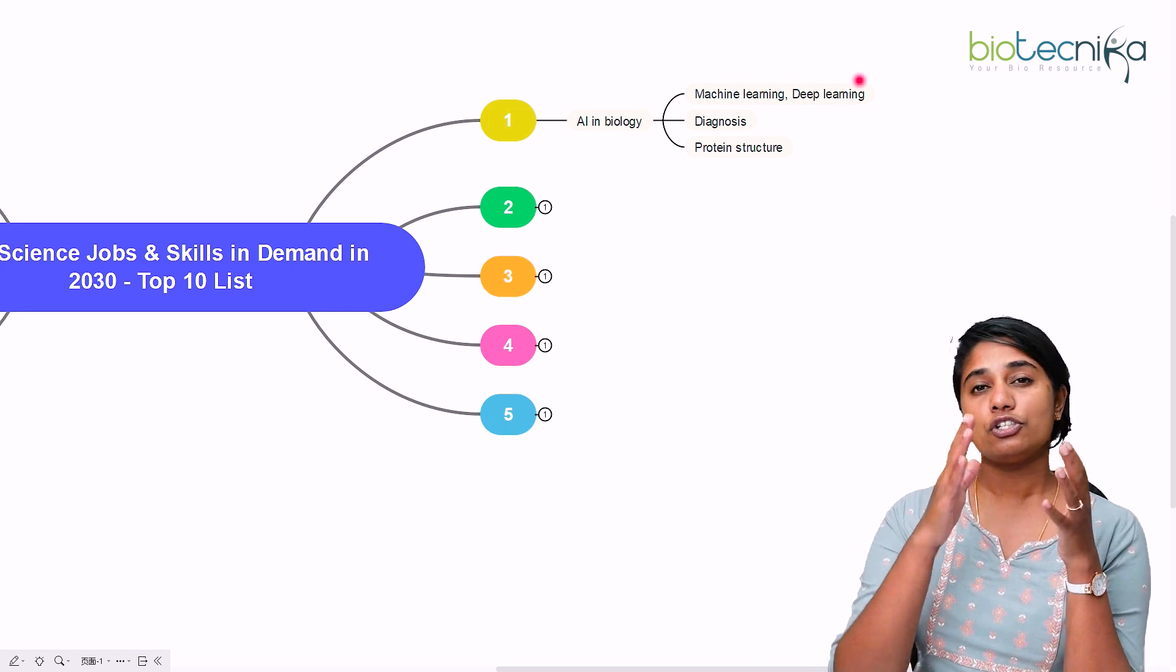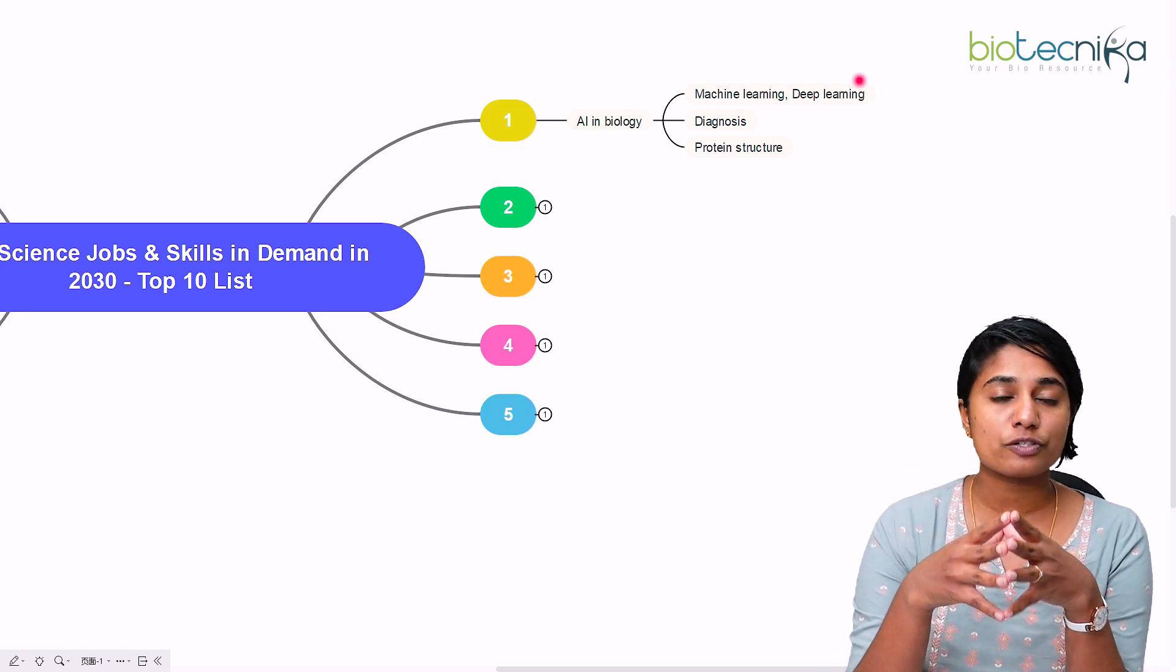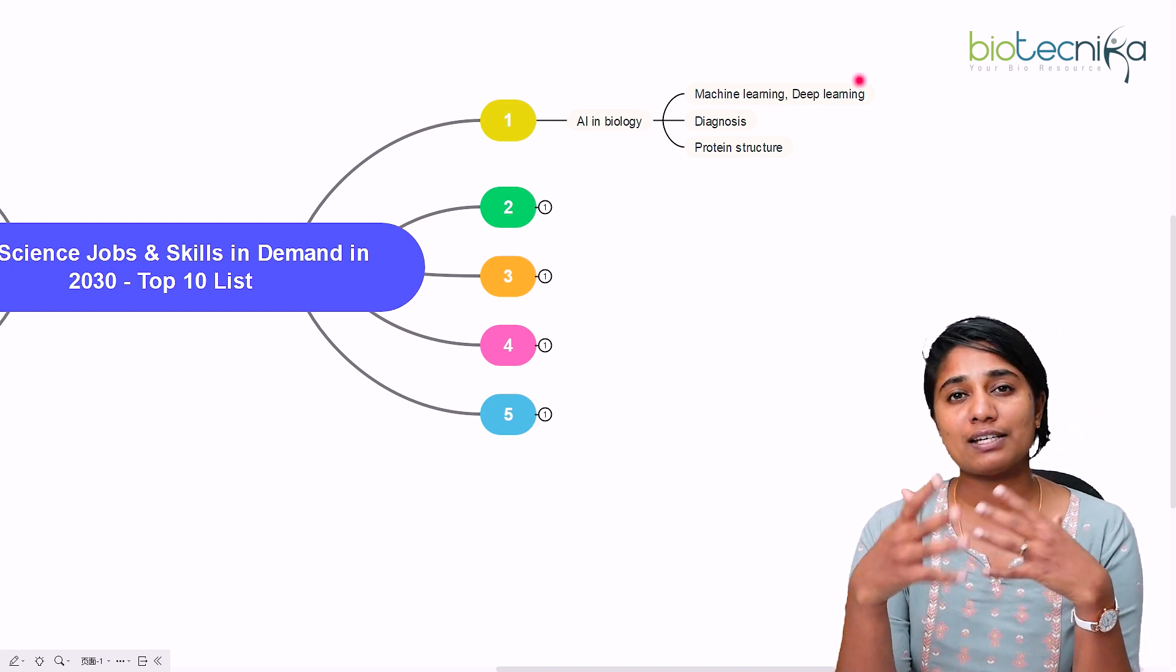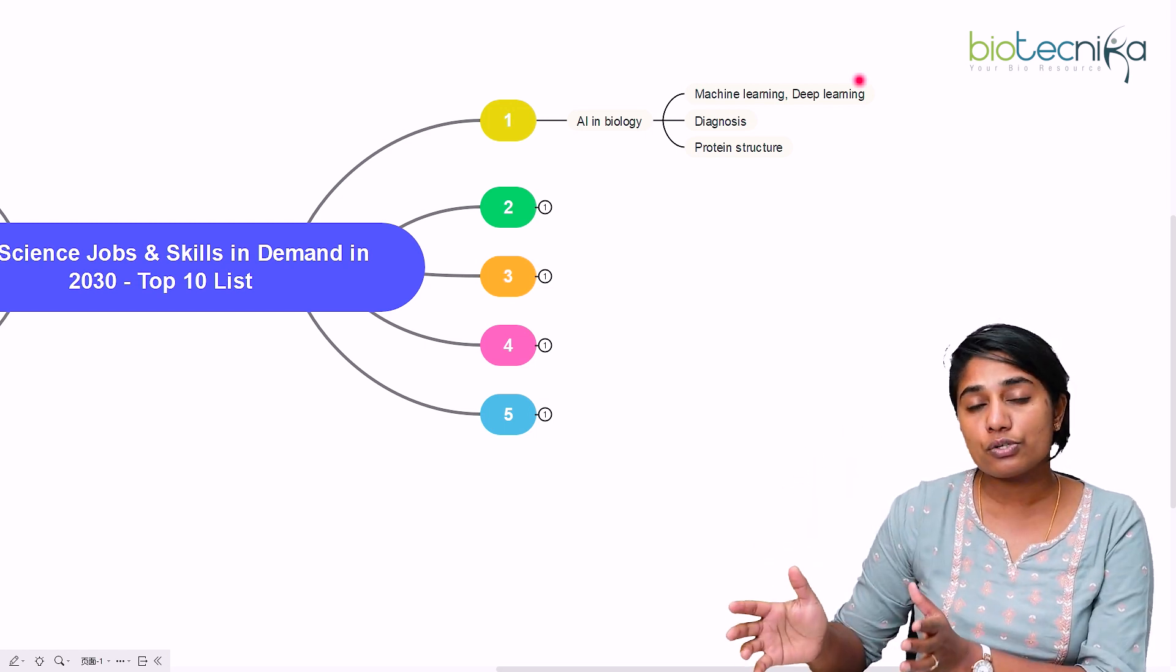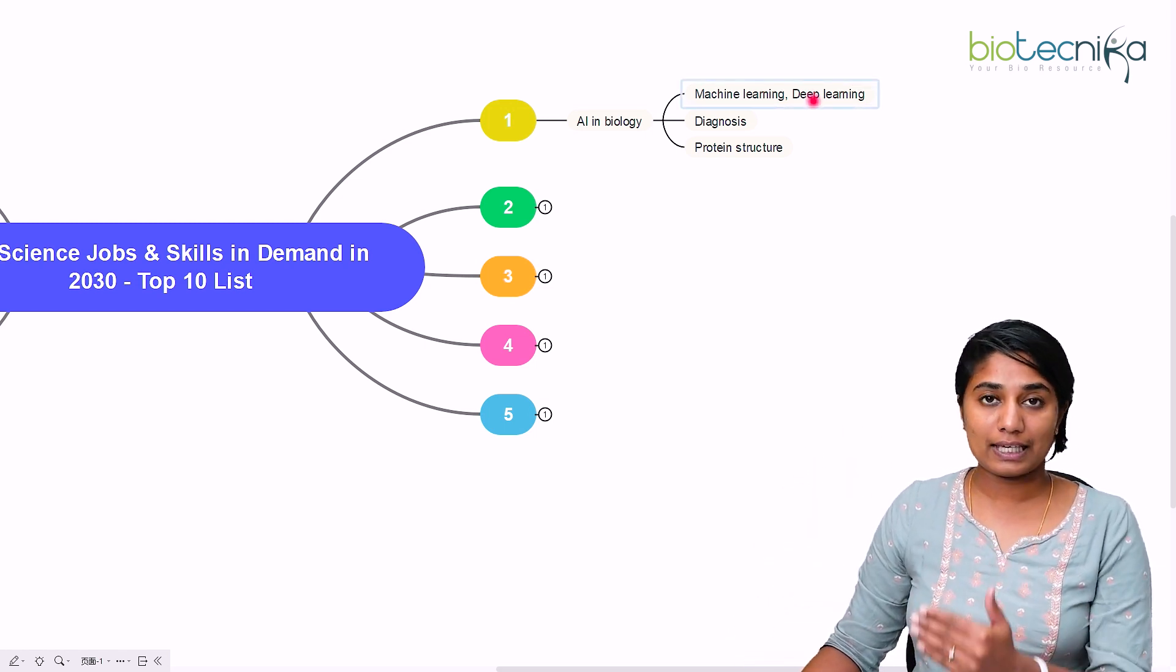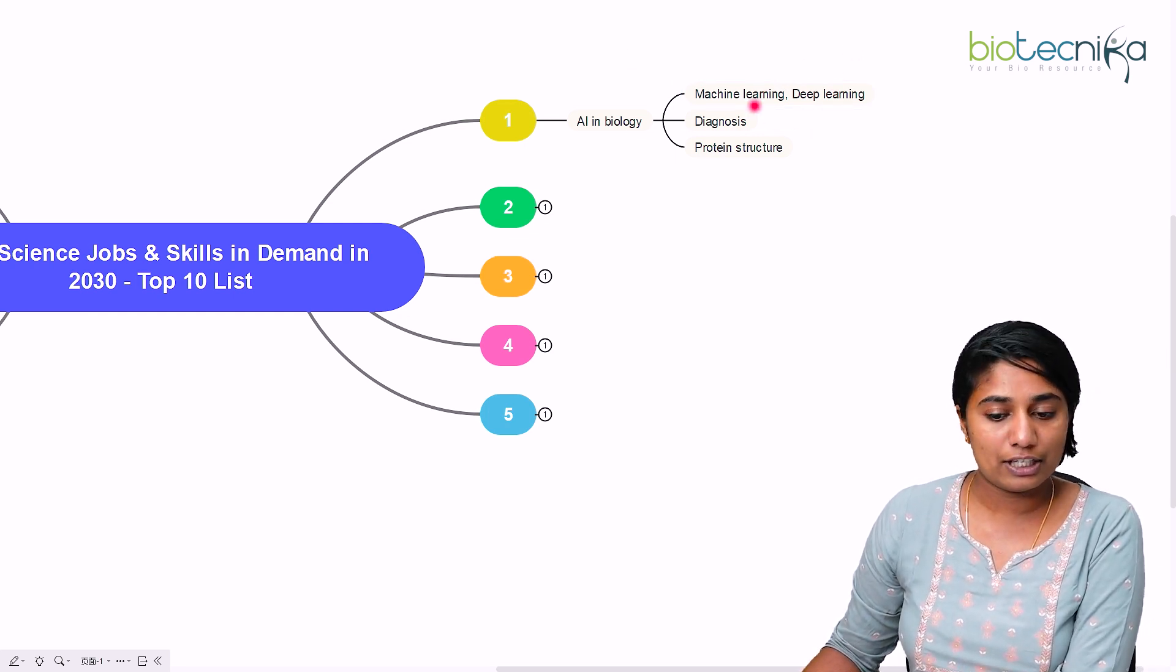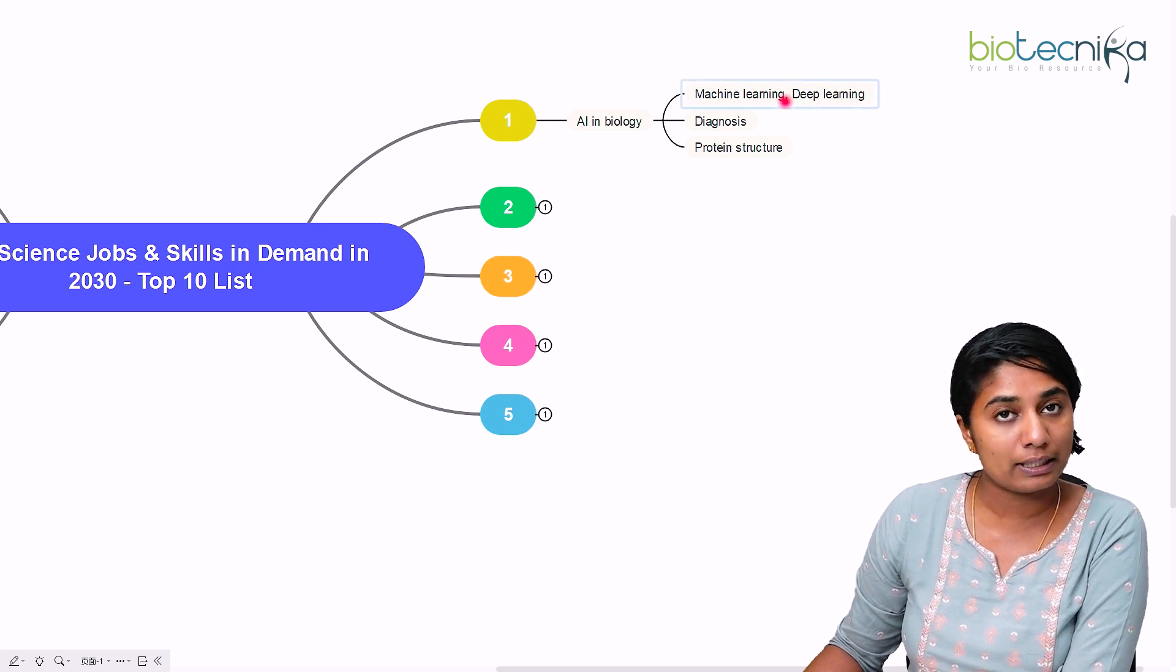Deep learning is drawing a conclusion or analysis from the relationship that it has formed. That is how we humans, after getting the results of any experiment, try to draw a conclusion from it. Similarly, the deep learning technique helps in drawing conclusions of the relationship between data. So that is what machine learning and deep learning is.